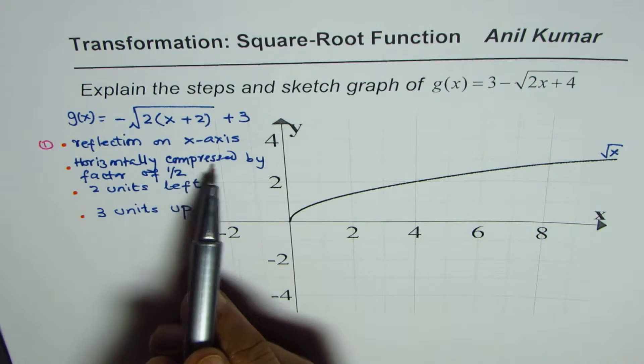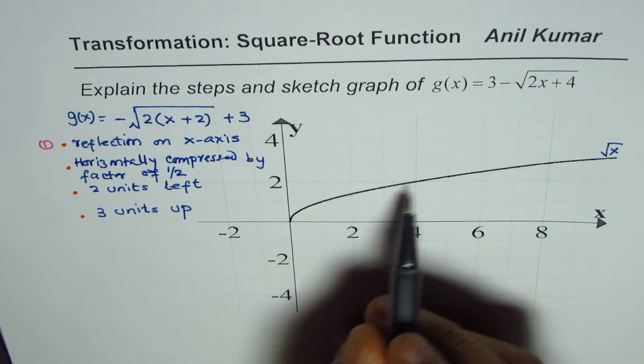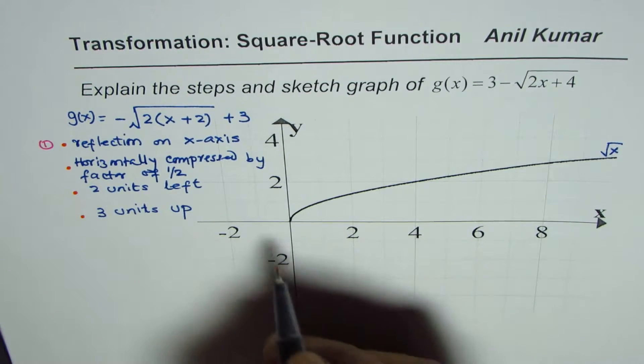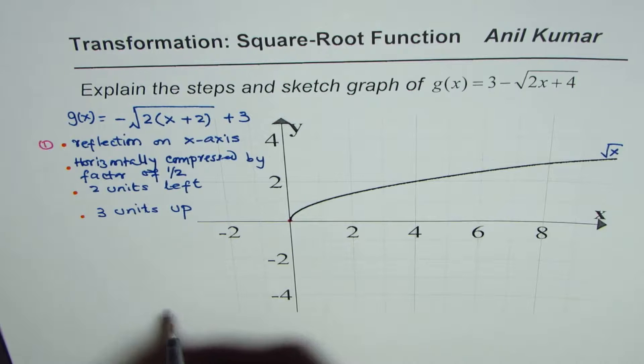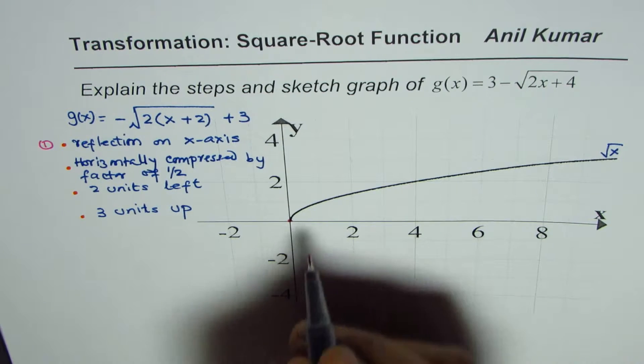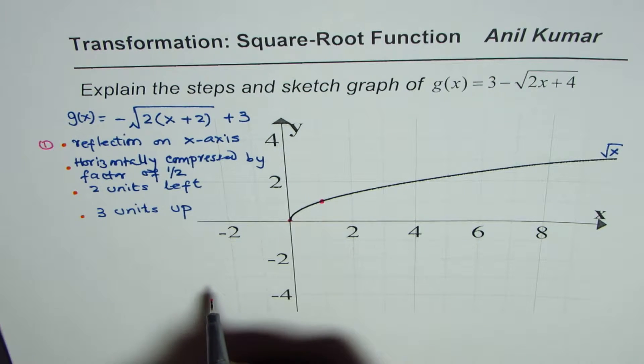First step: we are doing reflection on x-axis. That means zero remains at zero—these are some of the critical points. Then (1,1), this is another critical point which we are going to use.